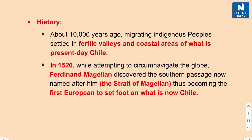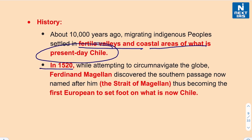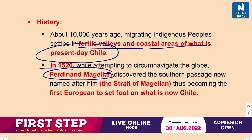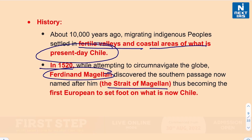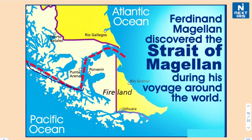About 10,000 years ago, indigenous people migrated and settled in the fertile valleys and coastal areas of what is known as present-day Chile. In the year 1520, while attempting to circumnavigate the globe, Ferdinand Magellan discovered the Southern Passage, now named after him — the famous Strait of Magellan — making him the first European to set foot on present-day Chile. Here we have the route known as the Strait of Magellan that Ferdinand Magellan discovered during his voyage around the world.